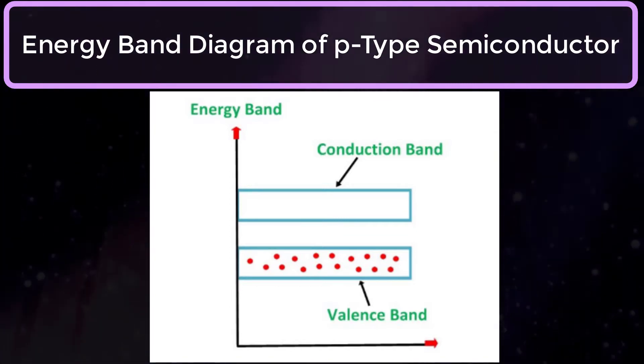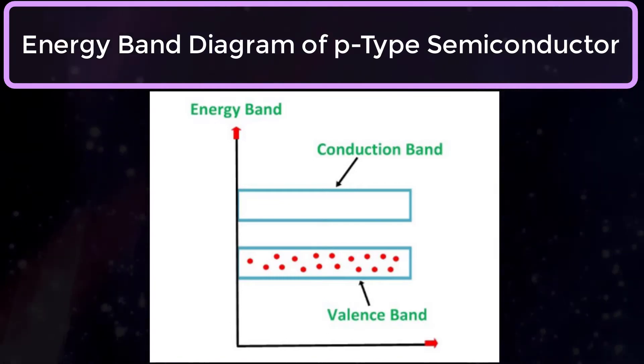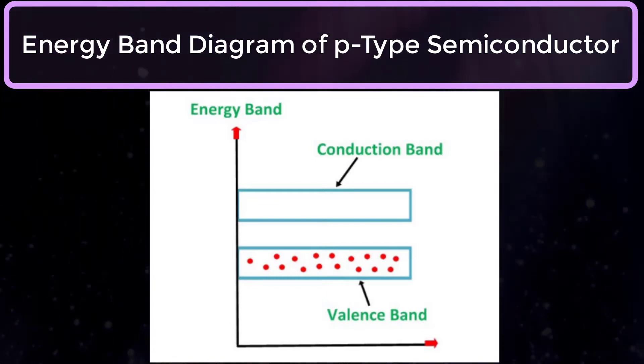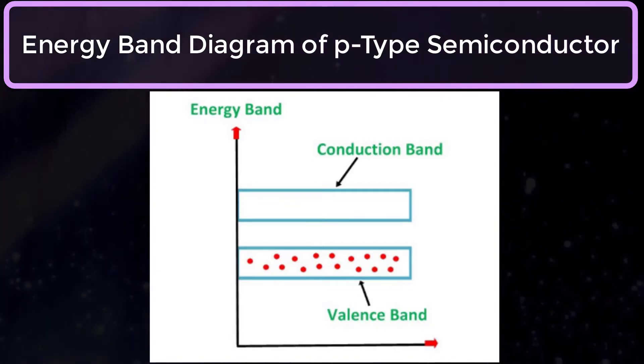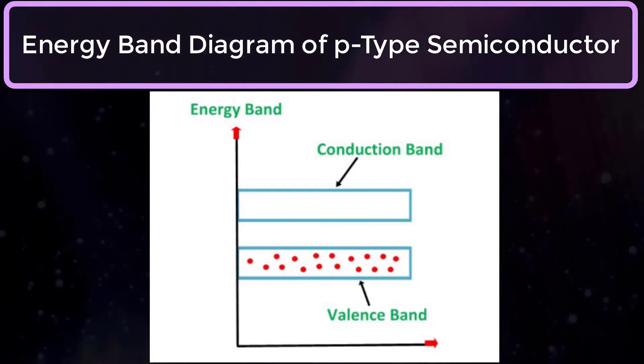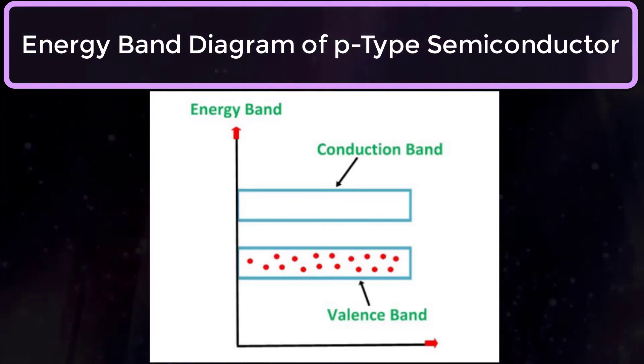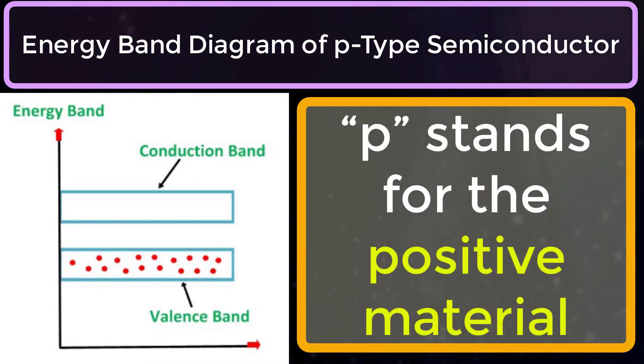They are produced when thermal energy at room temperature is imparted to the germanium crystal forming electron hole pairs. But the holes are more in number as compared to the electrons in the conduction band. This is because of the predominance of holes over electrons, the material is called as a P-Type Semiconductor. The word P stands for the positive material.